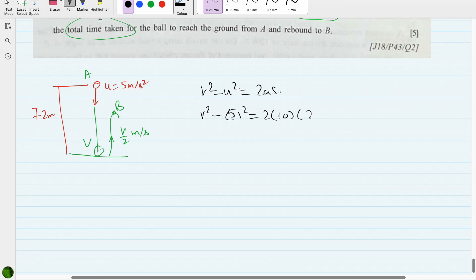Displacement is given, that is 7.2, so only unknown is v. v² = 2 × 10 × 7.2 + 5², which equals 169, and v equals √169, which is 13 meters per second.